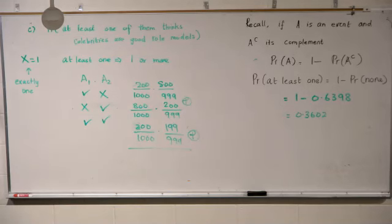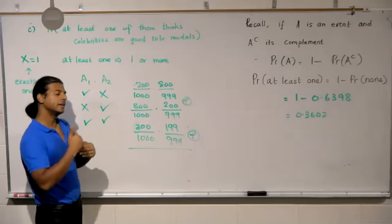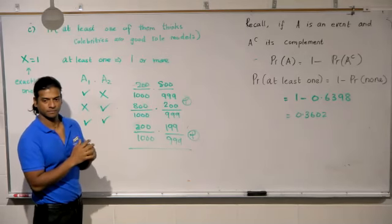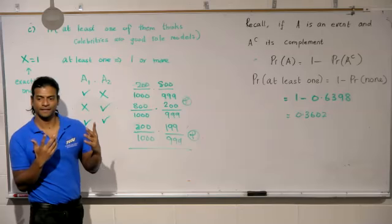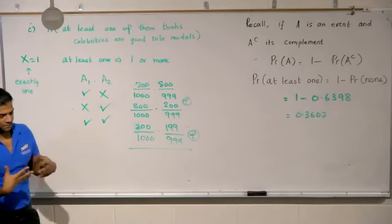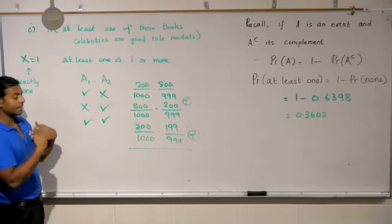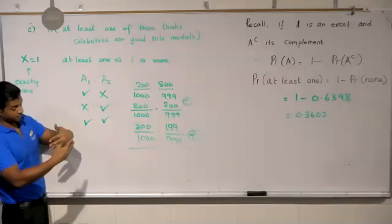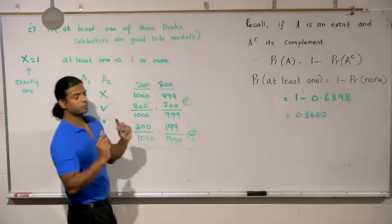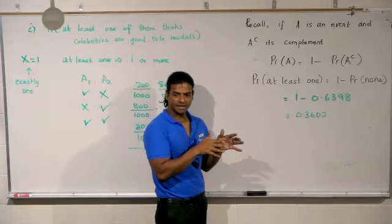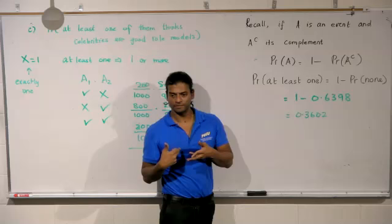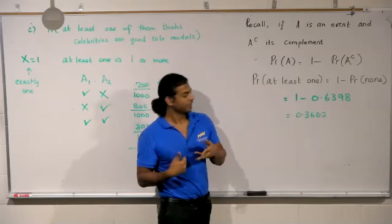Does that make sense though? It is a small probability, it's only 0.6398, and I'm saying at least one. Does that make sense? If I said exactly one, that would be a small probability. But I'm saying at least one, so either one of them or both of them, so that probability has to be slightly higher than saying exactly one. Does that make sense?